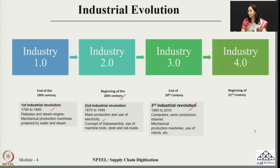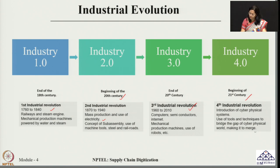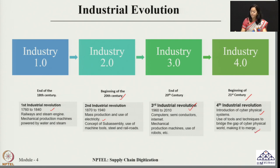The fourth industrial revolution — popularly known as Industry 4.0 — was introduced in Germany in the year 2011 at the Hannover Fair. Here, cyber-physical systems were introduced, which is again a very big revolution in the field. Different types of tools and techniques were used, and the purpose was to minimize the gap of the cyber-physical world and thereby see how it can benefit in implementing digital transformations and overall changing the whole processes and systems so that businesses can be redone in a new way.